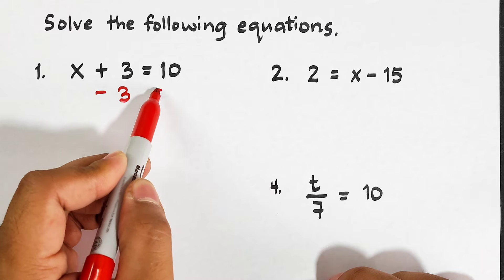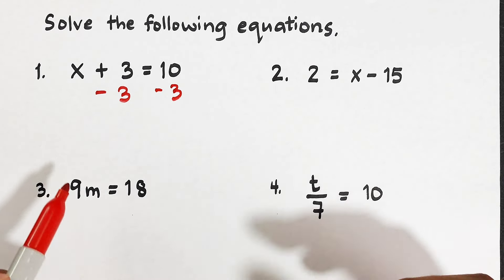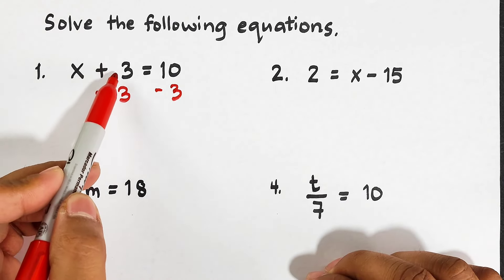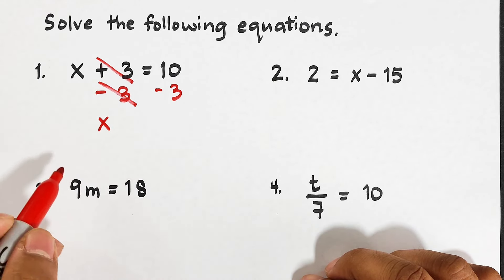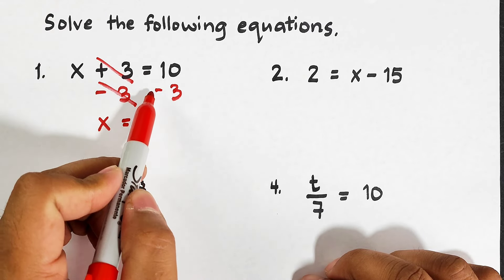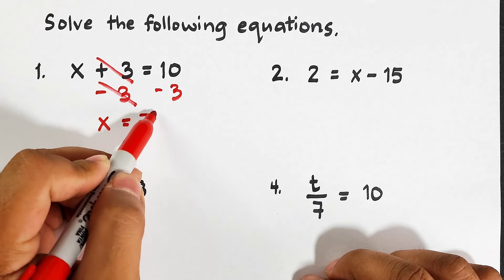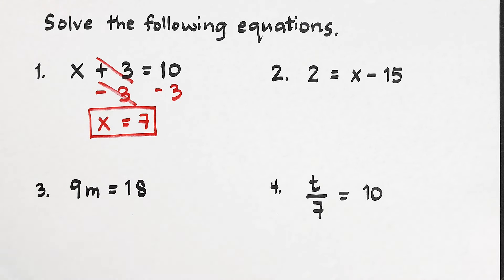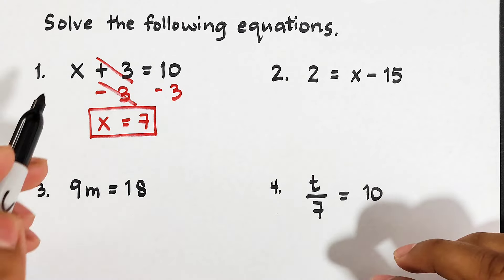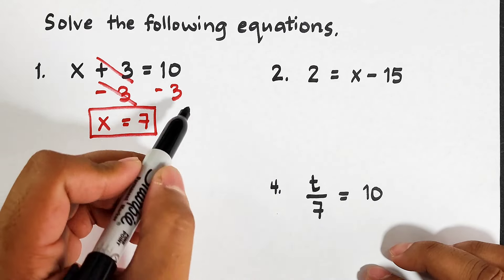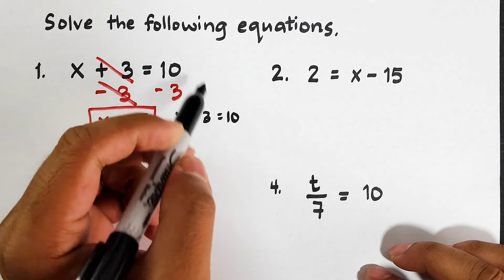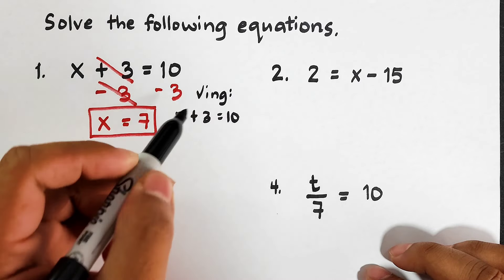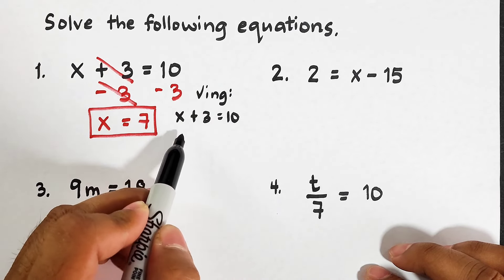Now here's the question: how are we going to eliminate plus 3? We need to undo this plus 3 by using its inverse operation. The inverse operation of plus is minus, so we need to subtract 3. And always remember to keep it balanced — if you subtract on the left side of the equation, you need to also subtract 3 on the other side. Positive 3 minus 3 equals 0, and on the other side we have 10 minus 3.